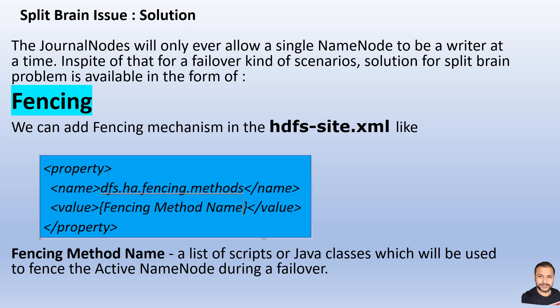However, a scenario may arise where during a failover, while one name node is still shutting down, it may handle some requests already supplemented to it and corrupt the entire metadata. To address such scenarios, Hadoop 2 provides a solution in the form of fencing. In your HDFS site XML configuration files, you can configure different fencing mechanisms, which ensure that at any single moment in the entire lifecycle of the Hadoop cluster, there can only be one active name node — there would not be a scenario of overlap.